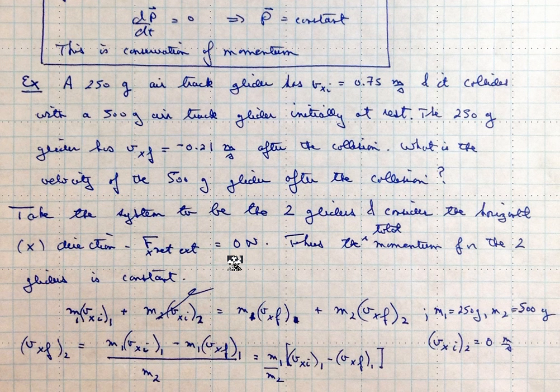So what we would do in this case is we'd take the system to be the two gliders, and we'd consider the horizontal direction, the x-direction. And for the x-direction, fx net external is equal to zero. There's no friction.